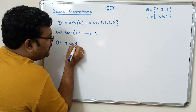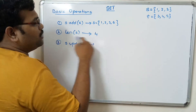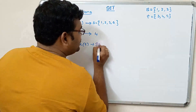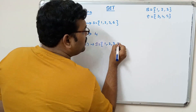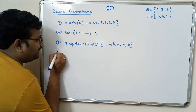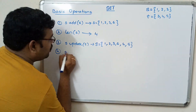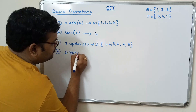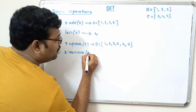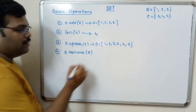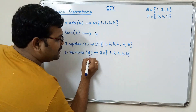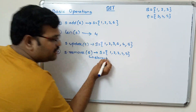The third operation is update: s.update(t) adds all elements of t into s. So s becomes {1, 2, 3, 6, 4, 5} — note 3 is already there so it's not duplicated. The fourth operation is remove: s.remove(6) removes element 6 from the set. Note: the argument is the element value, not an index.